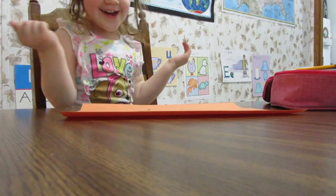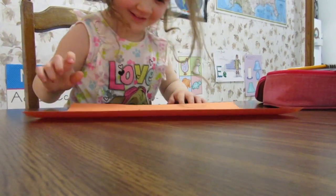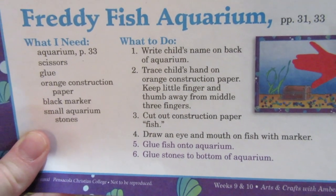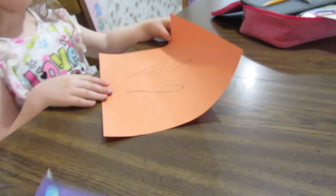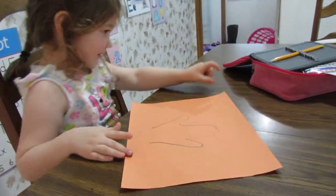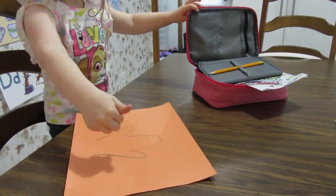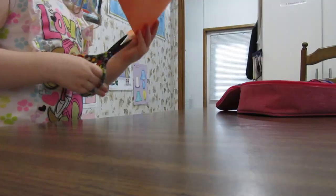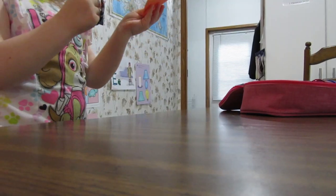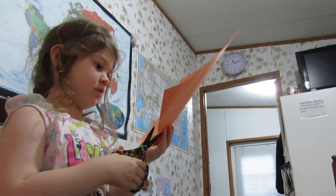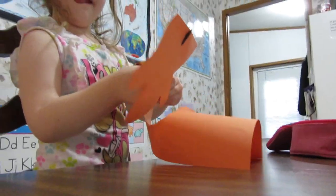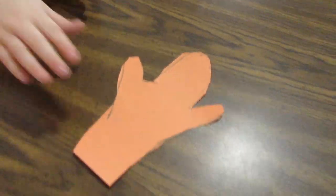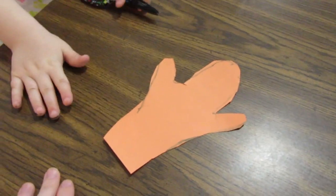Oh, a fish! A fish now. All right, step three — we have to cut out the fish. Can you get your scissors and cut it out? We have to cut on the line. Ta-da! Good job! That's a beautiful fish.